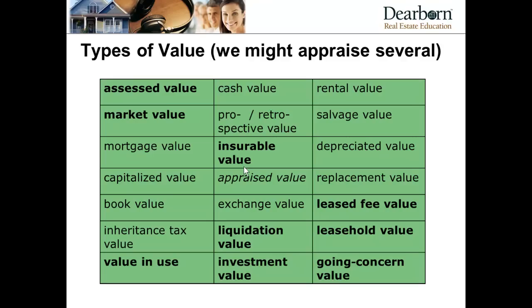Going concern value takes into account both personal and real property. For a service station and mini market, there's real property — land, buildings, underground tanks — plus personal property like inventory, and potentially goodwill, such as operating under the Chevron name. The same property on the same day may have different values depending on whether we're looking at market value, assessed value, insurable value, and so on. When doing appraisals, one of the requirements is to establish upfront what type of value and what definition of value you're going to express an opinion on.